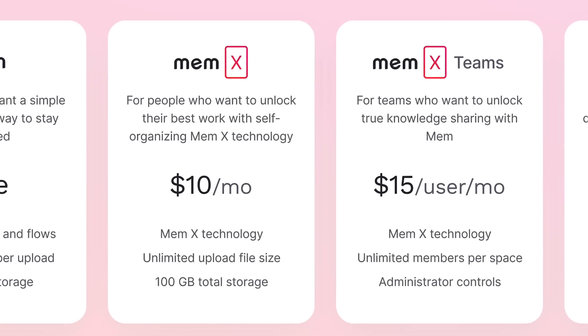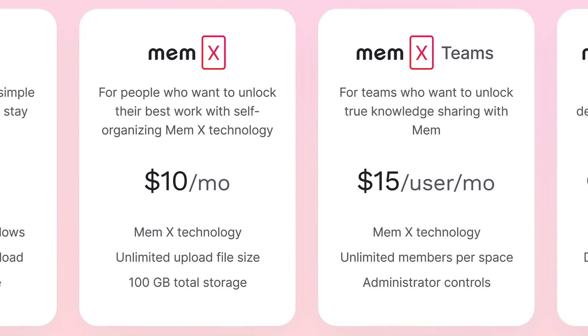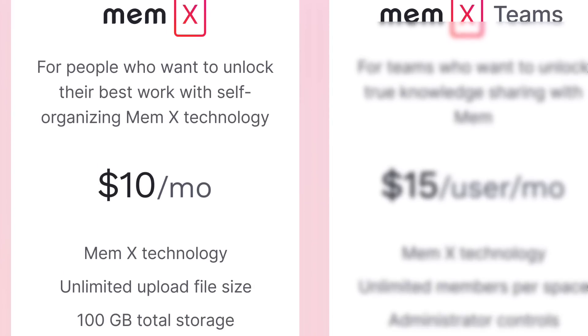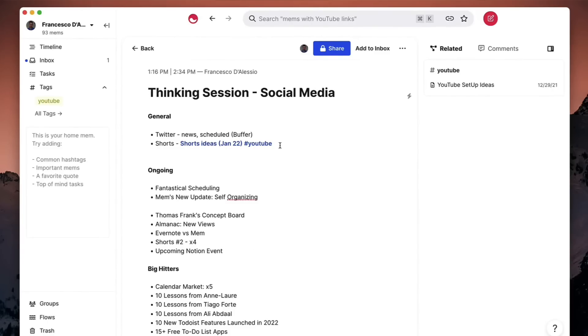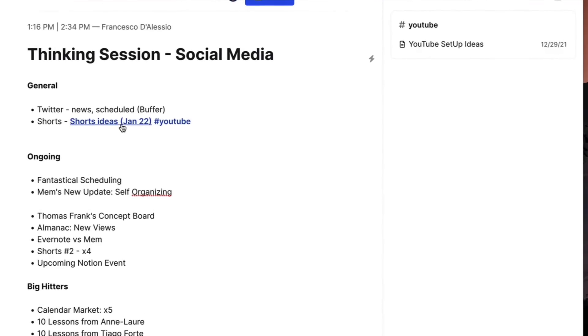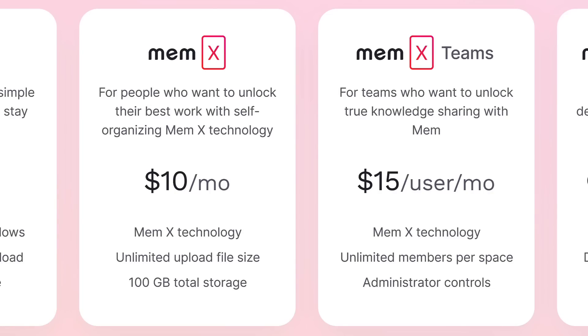There are now two more pricing plans: Mem X and Mem X for Teams. Mem X is designed to upgrade storage to 100 gigabytes and introduces something called Mem X technology. It's priced at $10 per month, which is reasonably priced — not fully premium, especially for an app that has some capabilities of Roam and Obsidian but also the relaxing and easy nature of apps like Evernote and Notion. Mem X for Teams is priced at $15 per user per month.